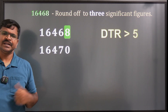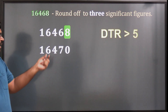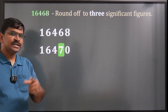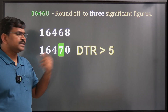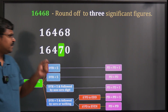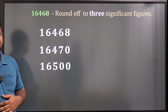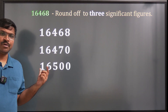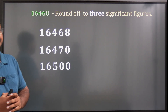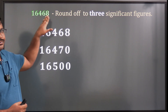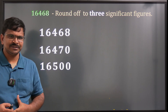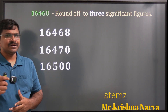Now the new DTR is 7. Again, DTR is greater than 5, so PD must be increased by one. The PD here is 4, so 4 becomes 5. The final answer after rounding off is 16500. So a measurement of 16468 reported to three significant figures must be written as 16500.